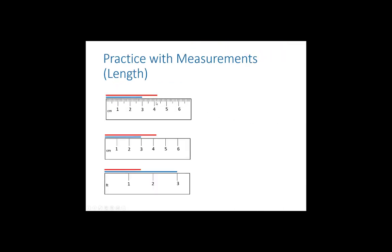For the first ruler: the red line looks almost certainly between 4.2 and 4.3, and about halfway, so 4.25 cm is a good value. The blue line looks right on the line — since we've agreed to go to hundredths, you can't write 3 or 3.0; it must be 3.00 centimeters. If you thought it was just a bit short, 2.99 cm would also be fine, but it must go to the hundredths place.